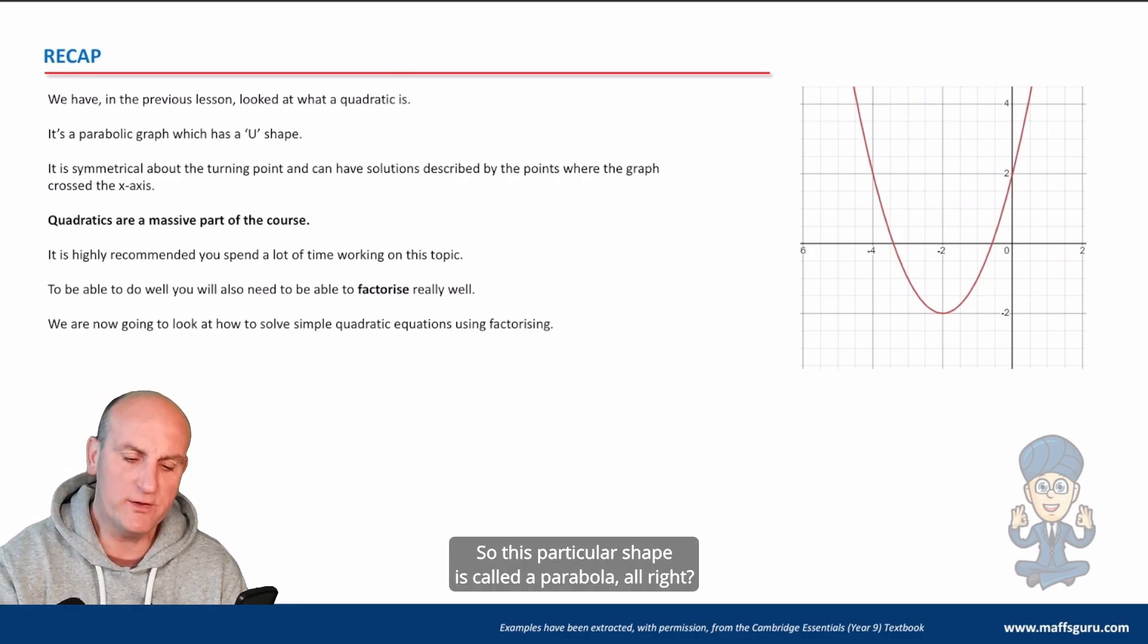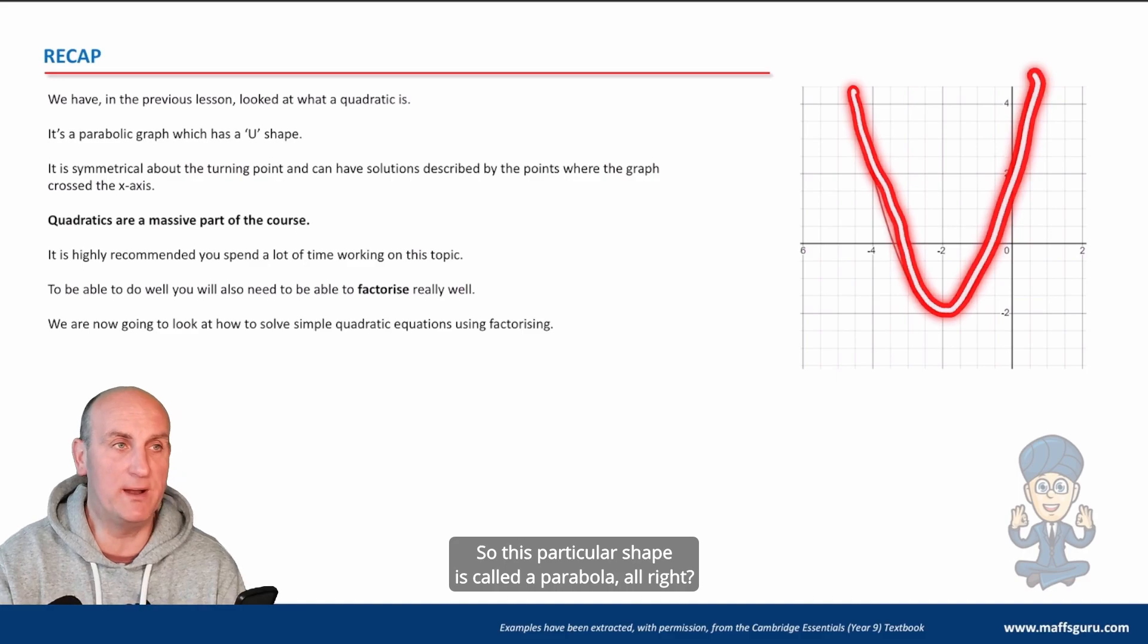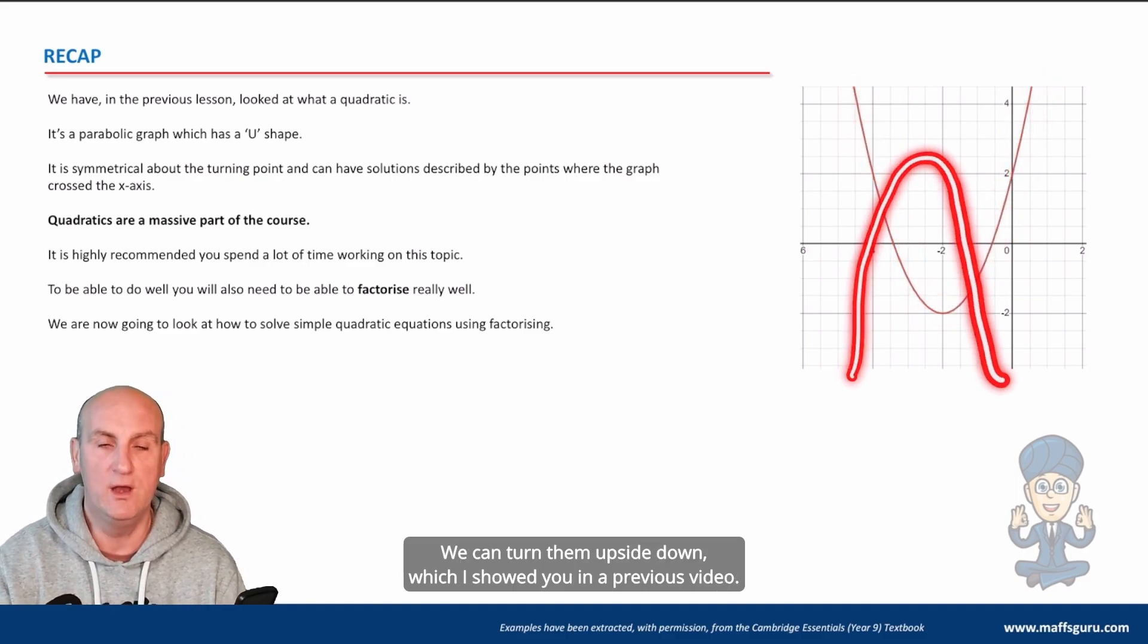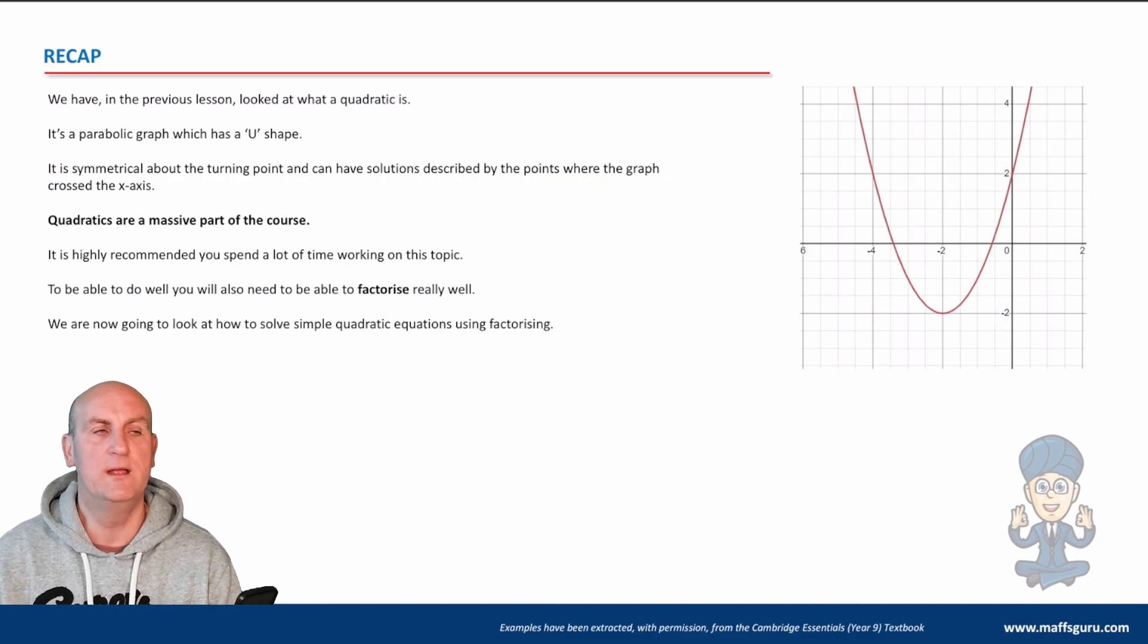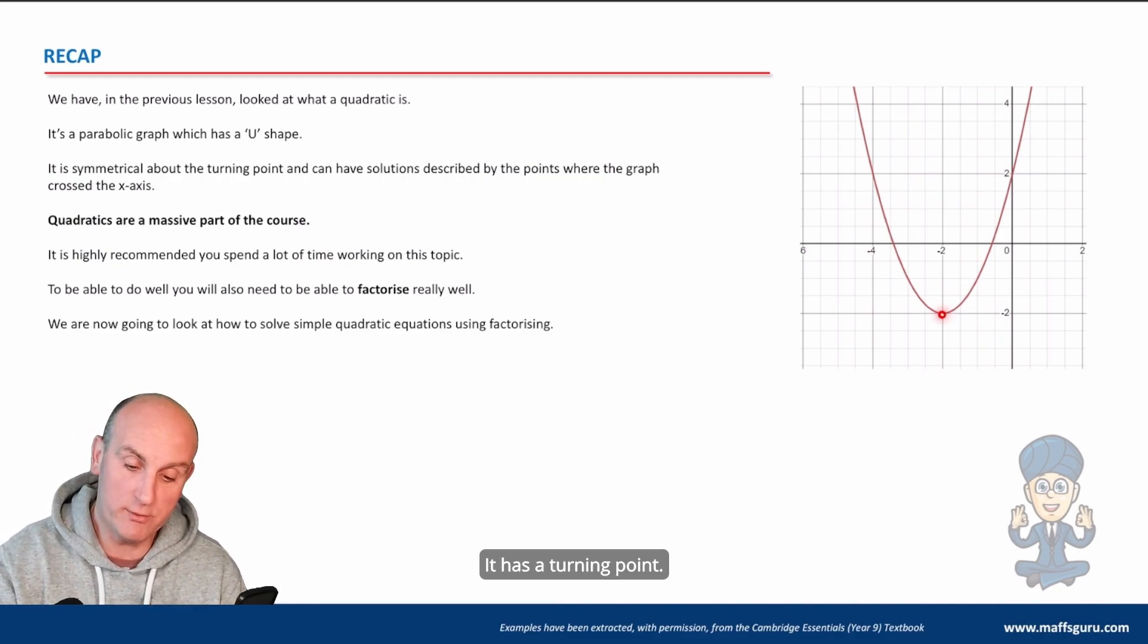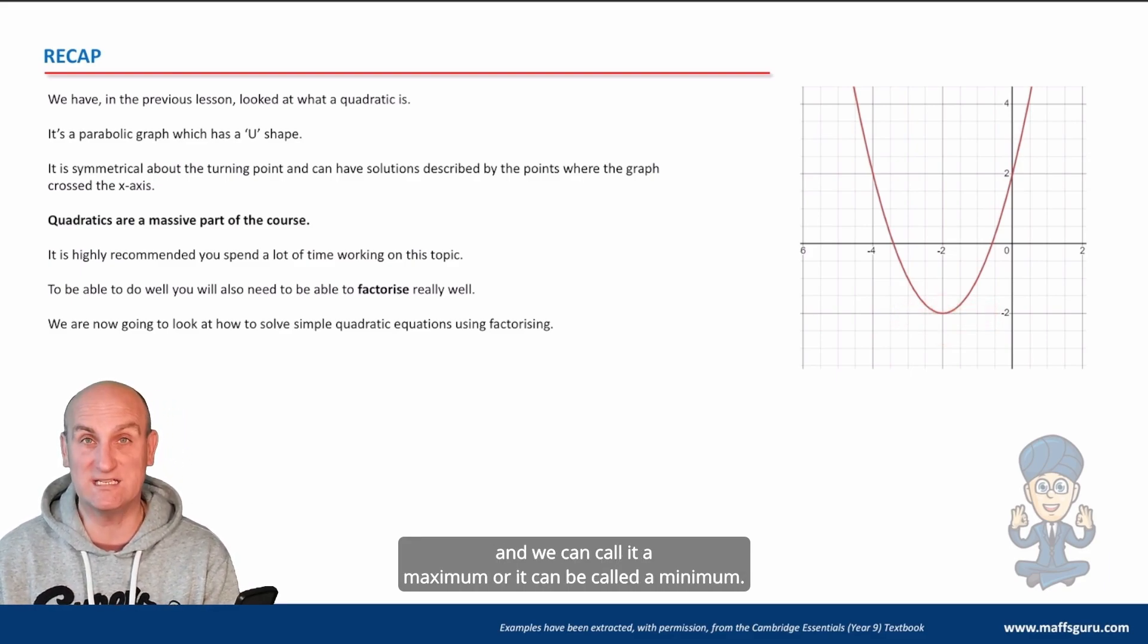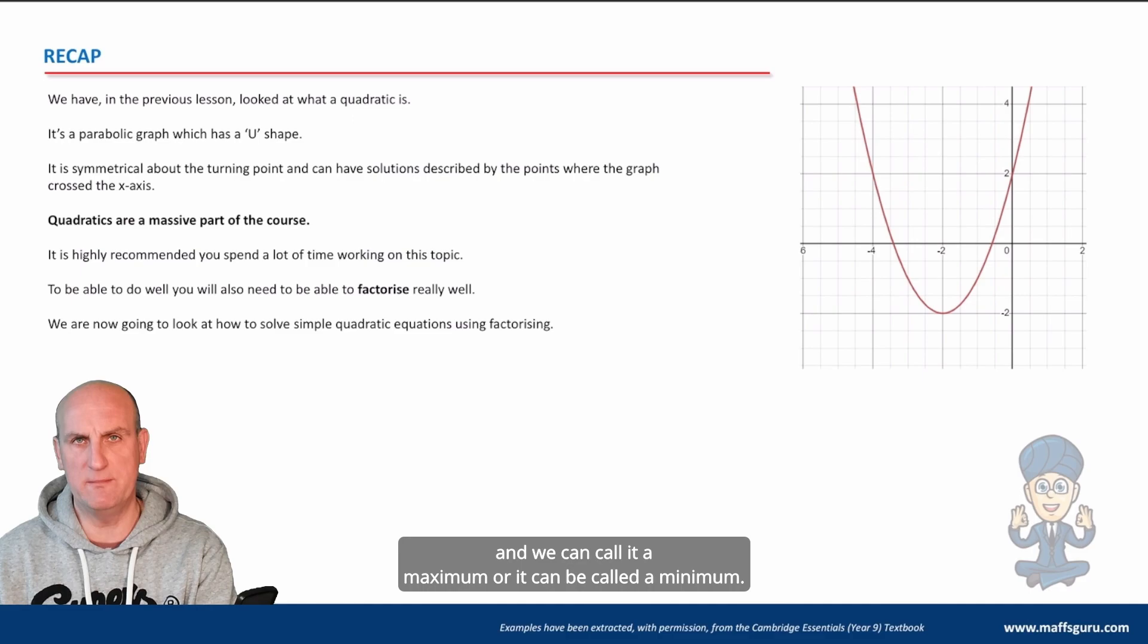It's parabolic. So this particular shape is called a parabola. It's a U-shape. It can also be an N-shape. We can turn them upside down, which I showed you in a previous video. It has a turning point. So this point here, that very bottom point there, is its turning point. And we can call it a maximum, or it can be called a minimum.